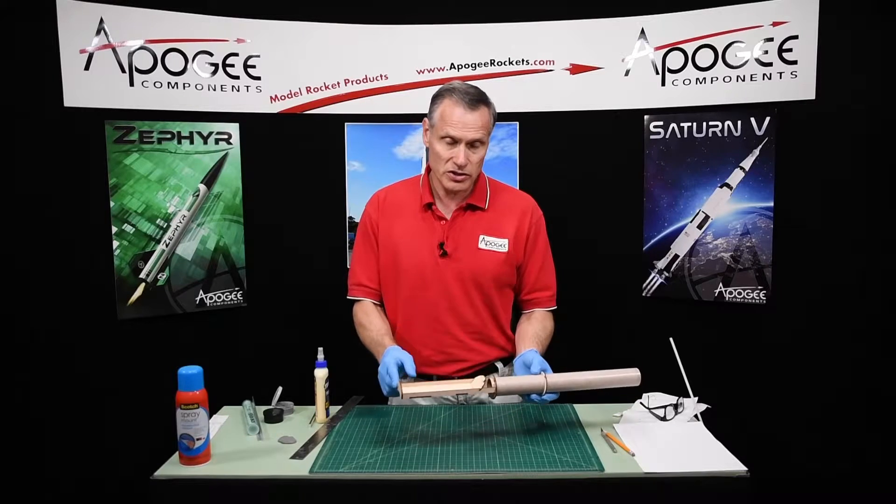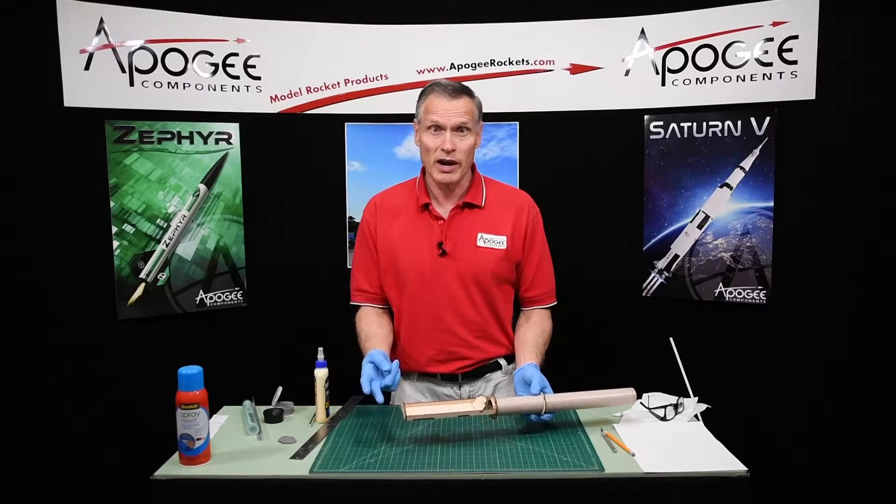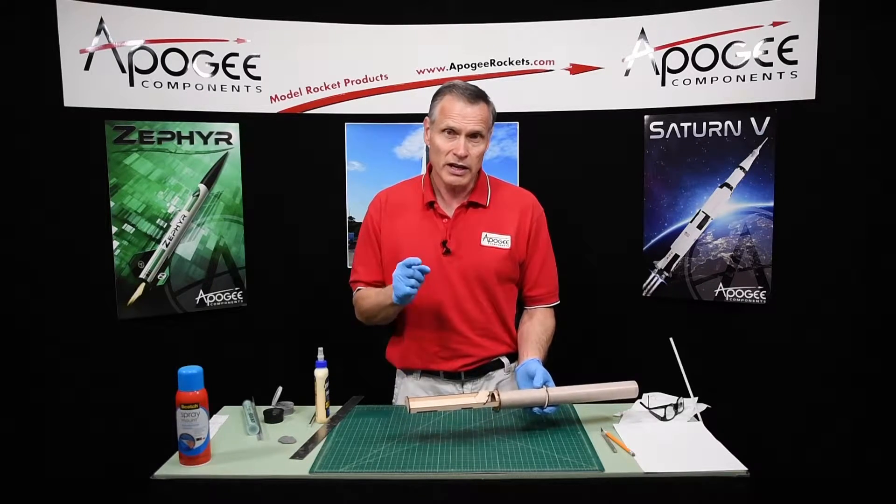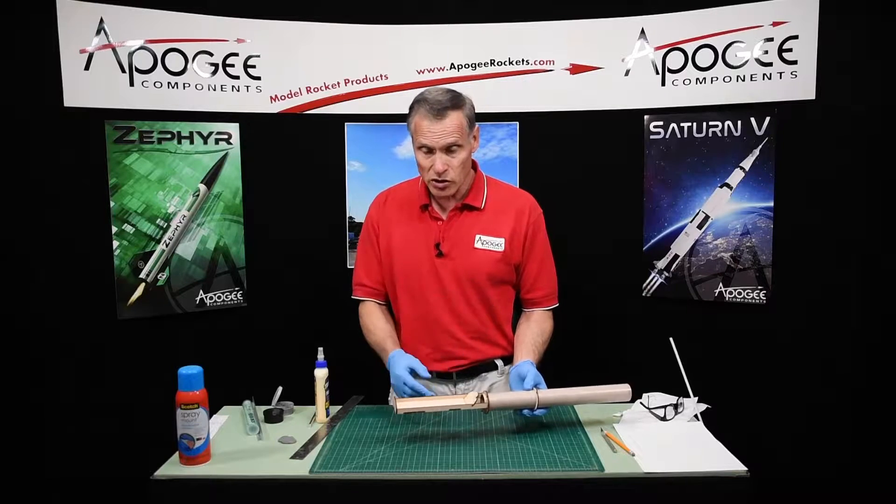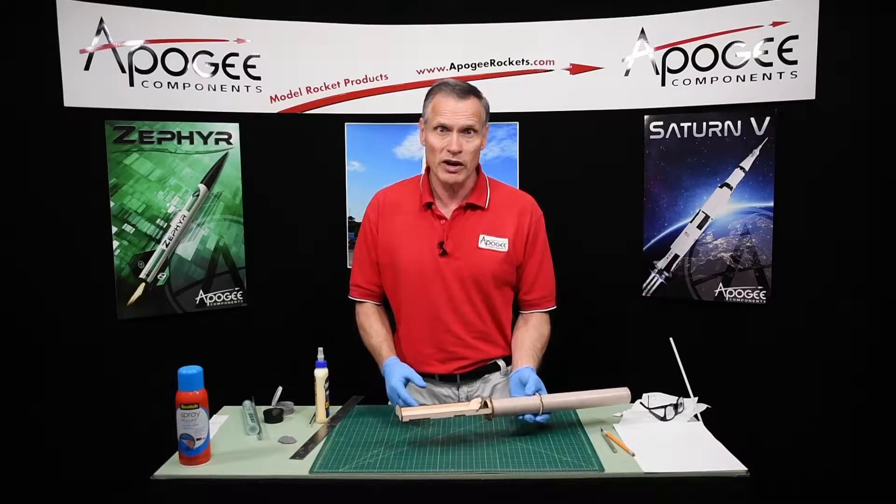We're building the Sandhawk Sustainer rocket that's going to go on the Terrier Booster to be a two-stage rocket. It's going to be a high-power rocket, and it's controlled by electronics. And in this episode, we're going to continue building the electronics bay and getting it ready to go onto the rocket.